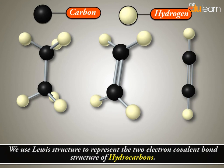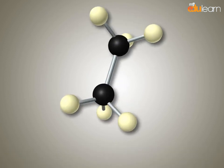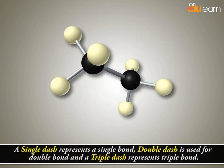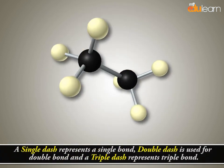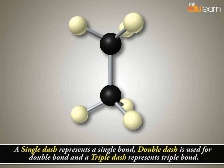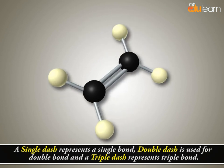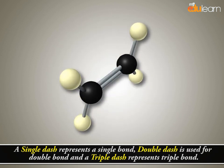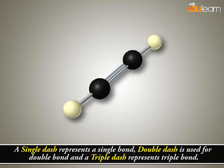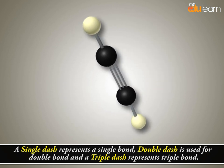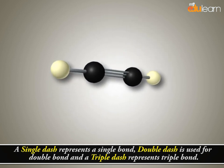We use Lewis structures to represent the two-electron covalent bond structure of hydrocarbons. A single dash represents a single bond, a double dash is used for a double bond, and a triple dash represents a triple bond.